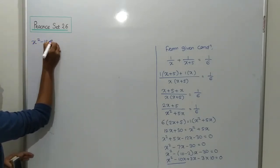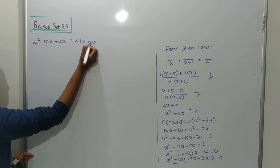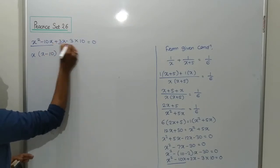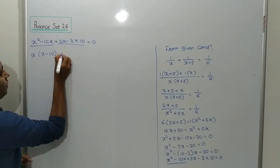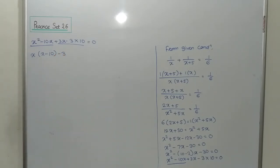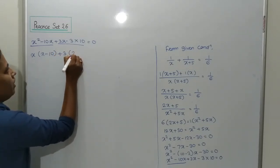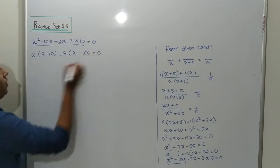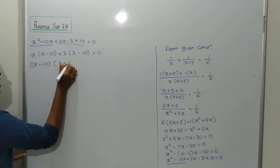So: x squared minus 10x plus 3x minus 3 into 10 equals 0. Take x common: x(x minus 10), and take plus 3 common: plus 3(x minus 10) equals 0. Therefore, (x minus 10)(x plus 3) equals 0.